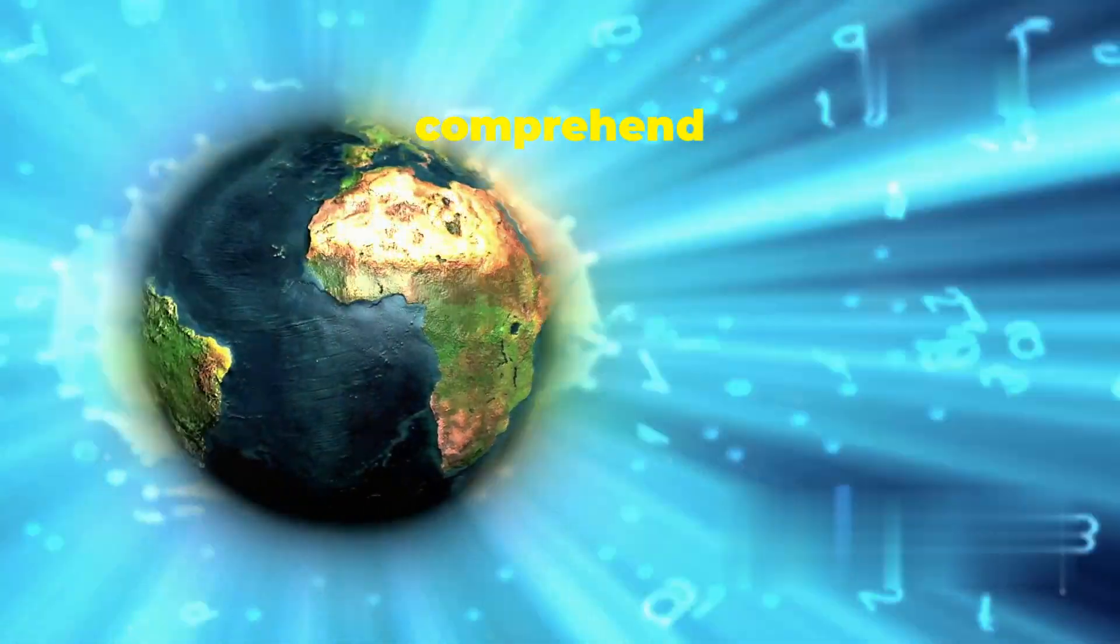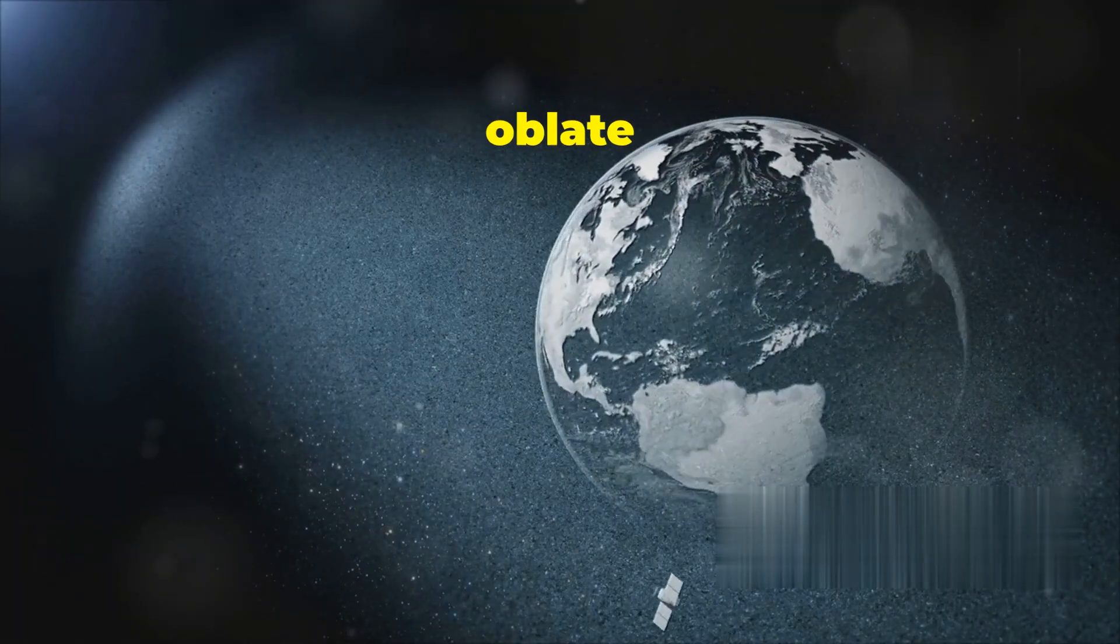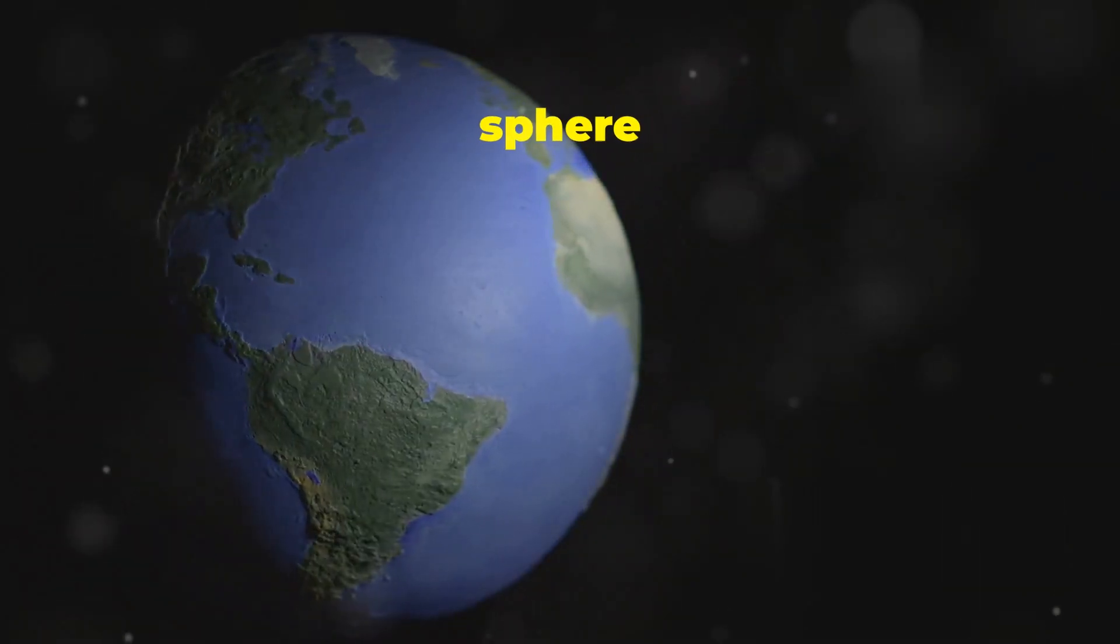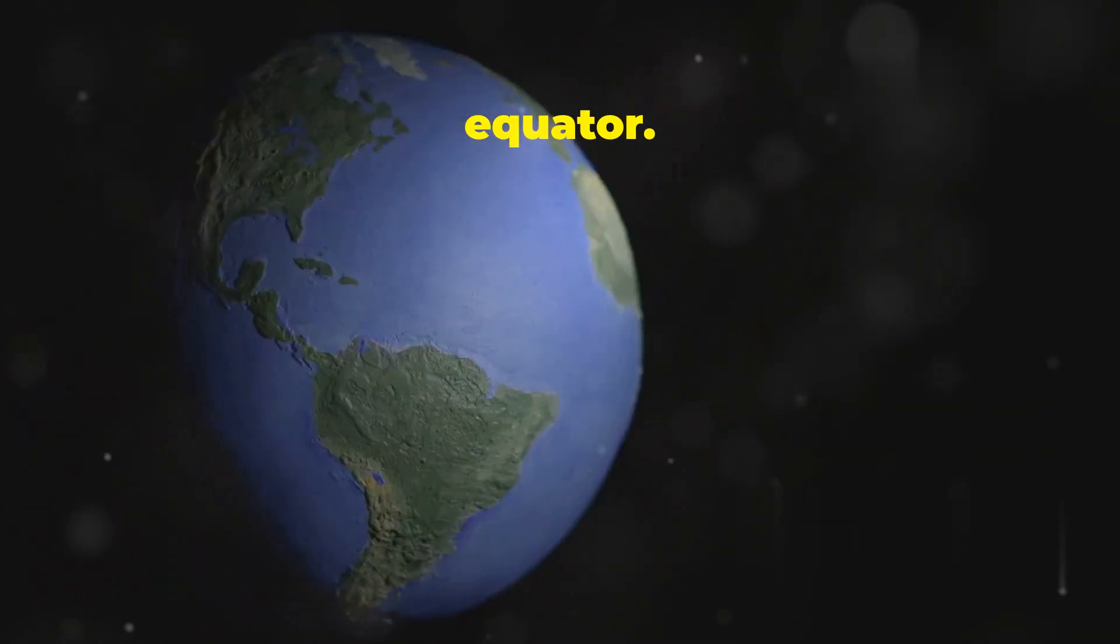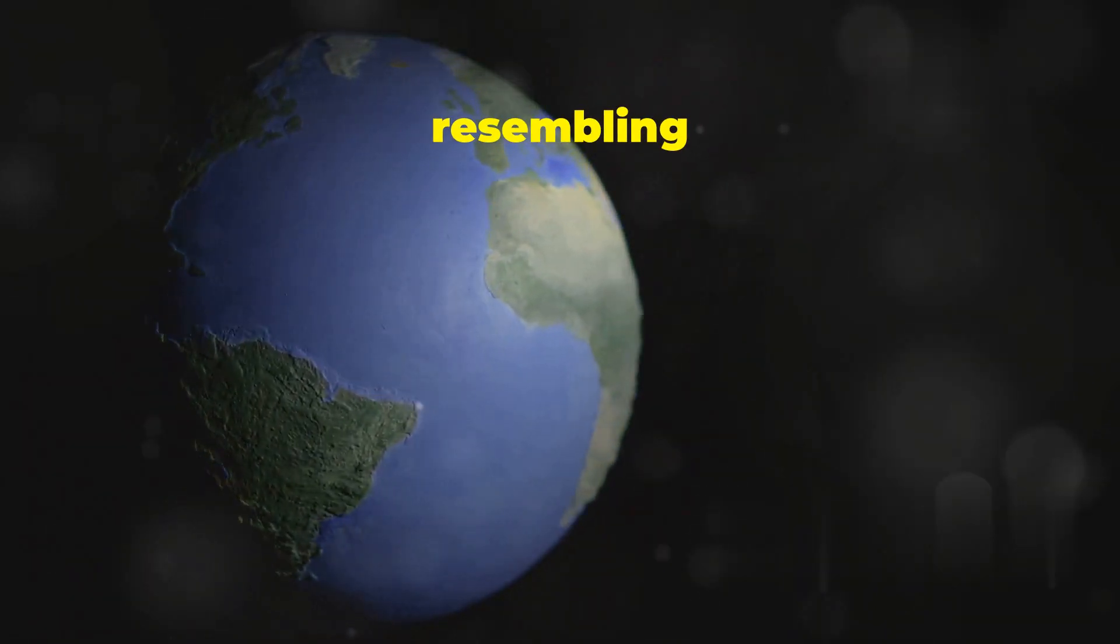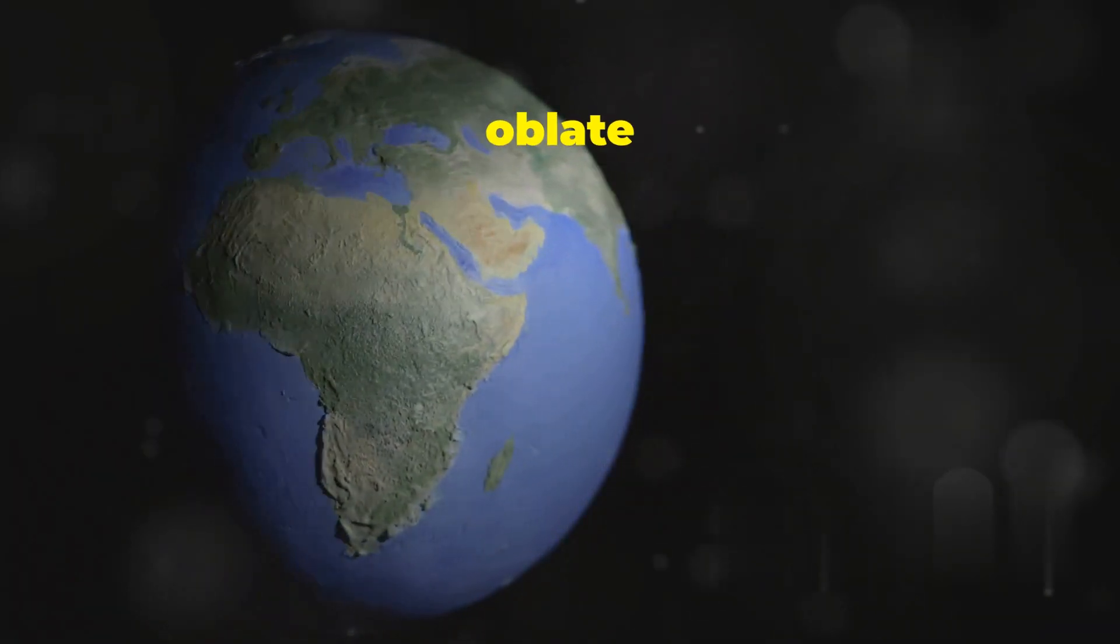To comprehend the true shape of Earth, we must delve into the realm of geometry. Forget the perfect sphere, embrace the oblate spheroid. Picture a sphere that has been gently squeezed at its poles and stretched at its equator. This subtle deformation, resembling a slightly flattened basketball, is the defining characteristic of an oblate spheroid.